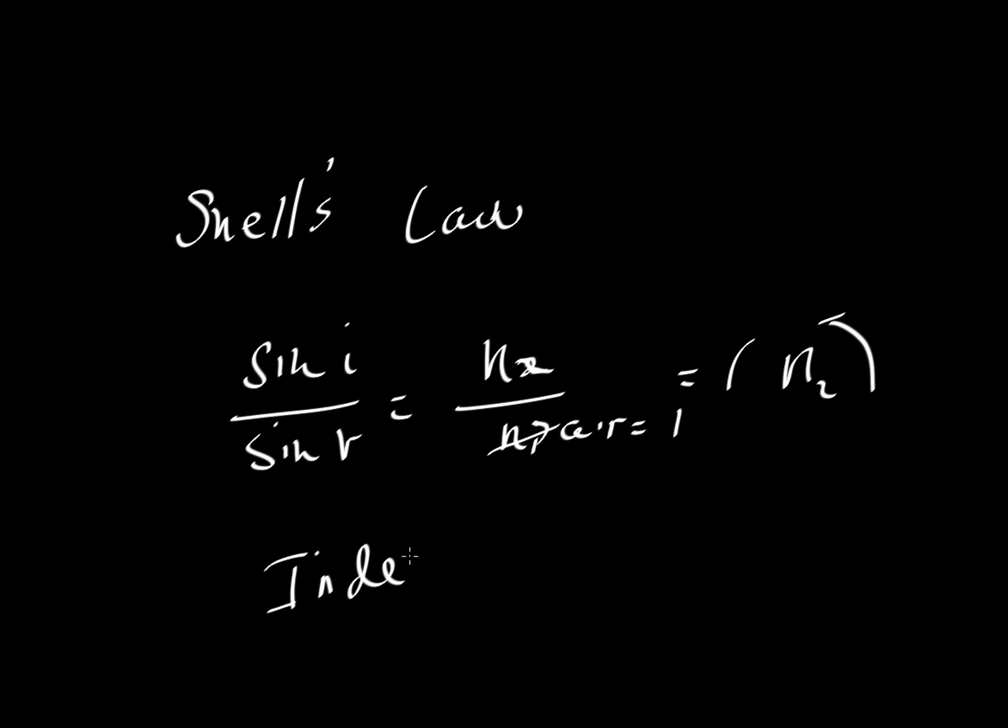So index of refraction is going to be essentially equal to, when it's listed, when you see numerical values in the table, it's that value of N will be the velocity of light in a vacuum, which is going to be very close to the velocity of light in air, divided by the velocity of light in whatever the material is. We'll just write M-I-N for a mineral, since that's mostly what we'll be looking at.